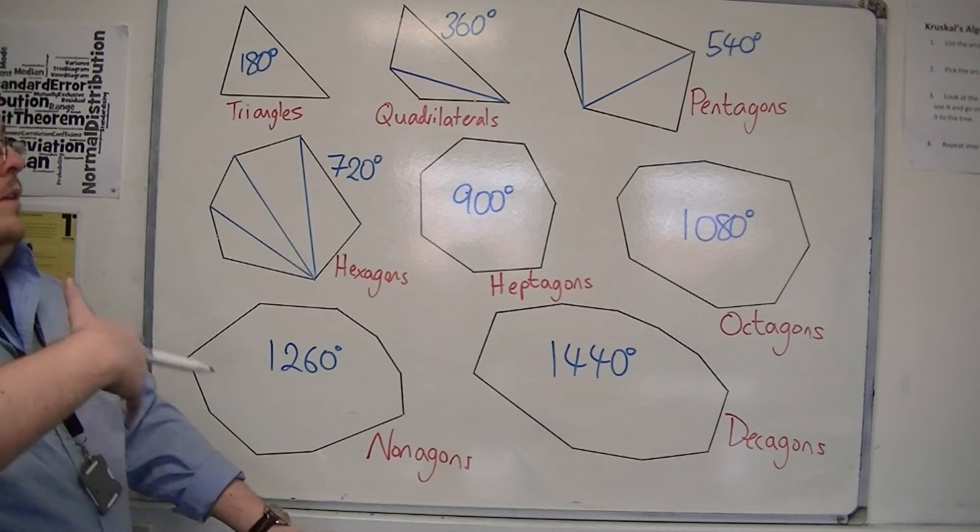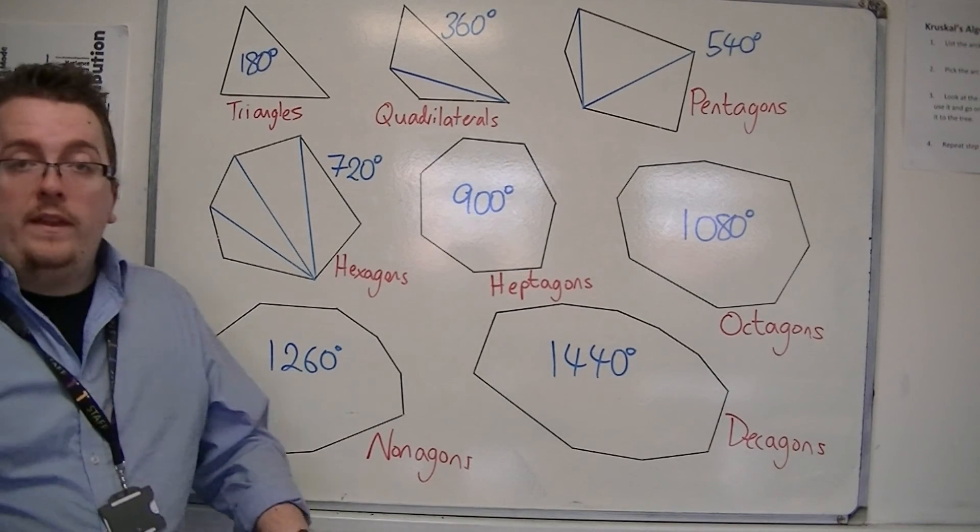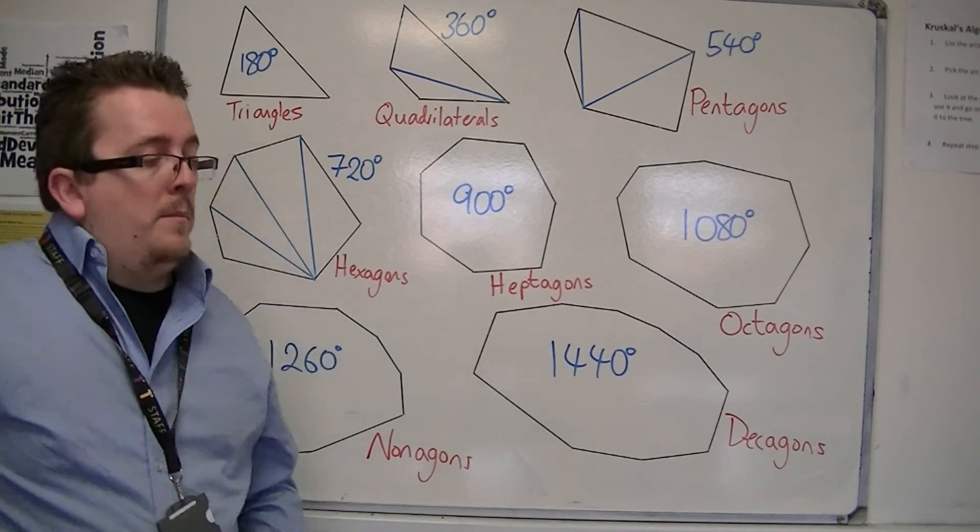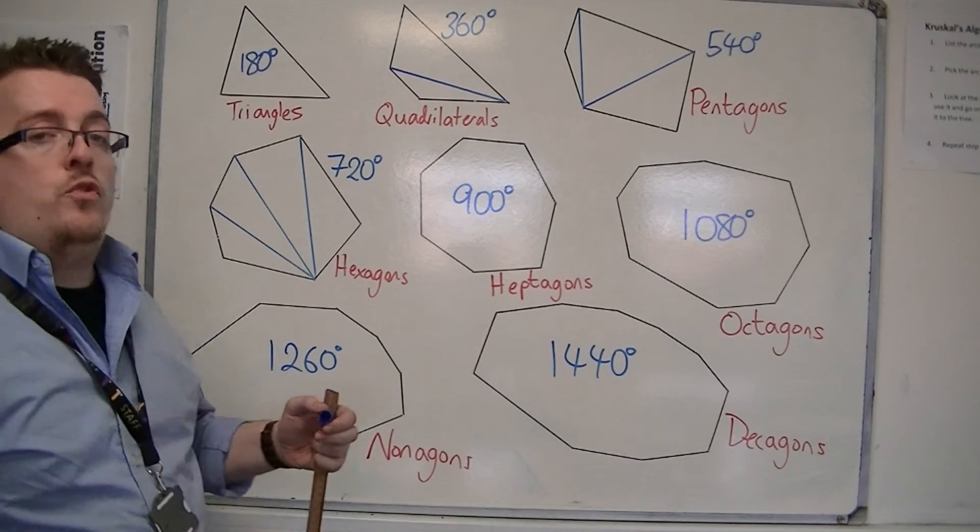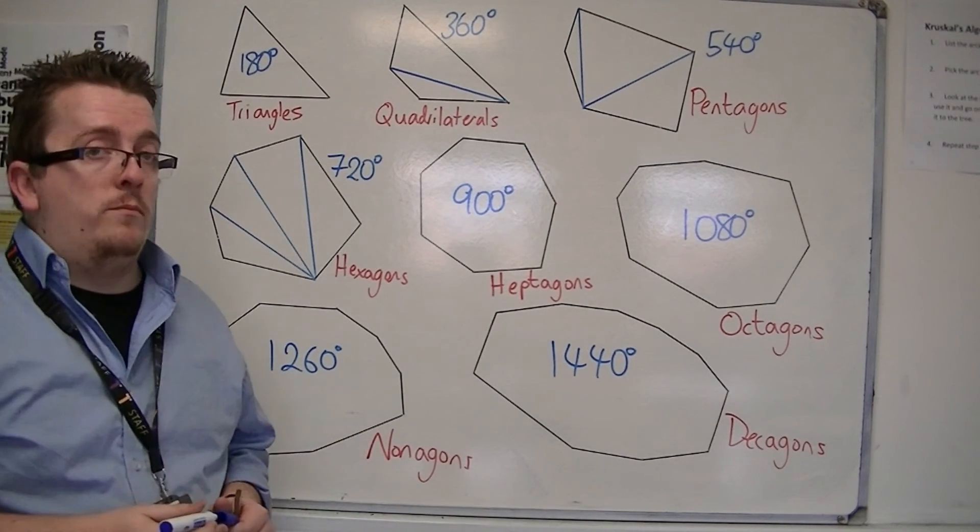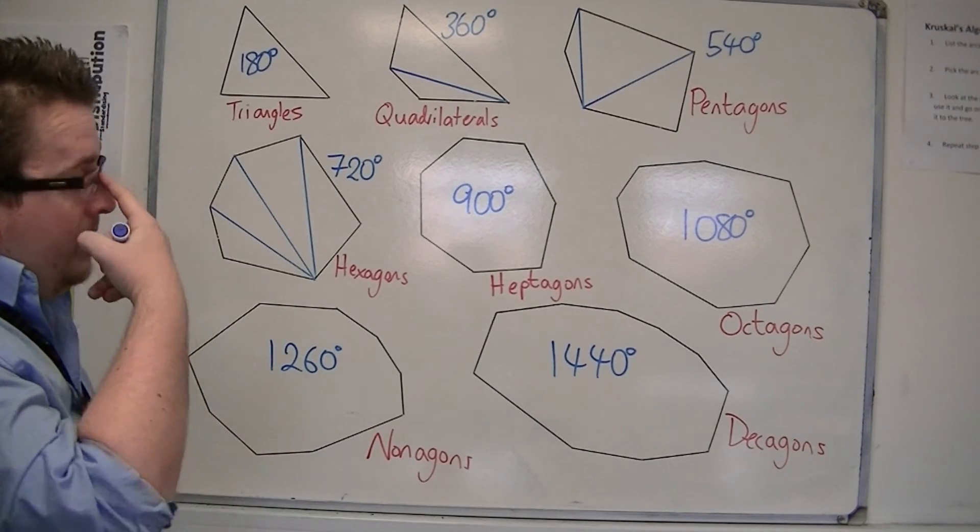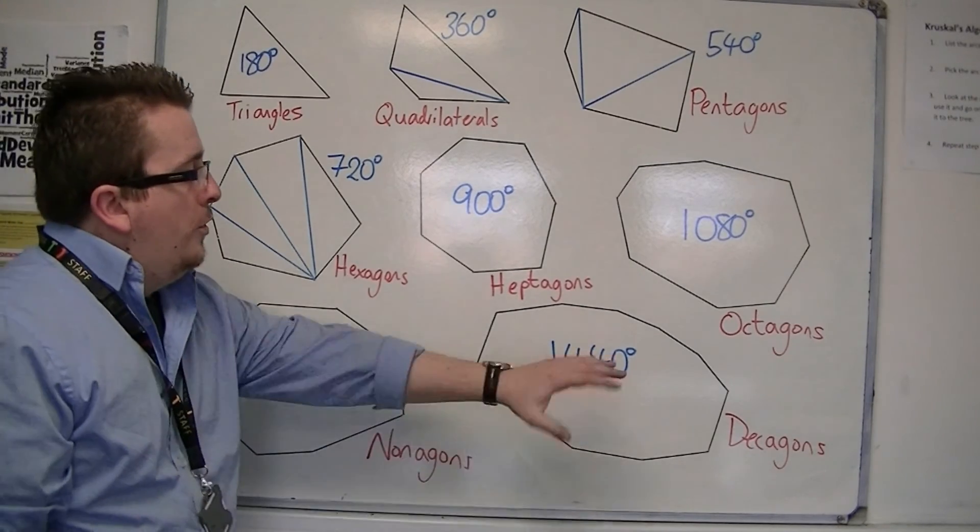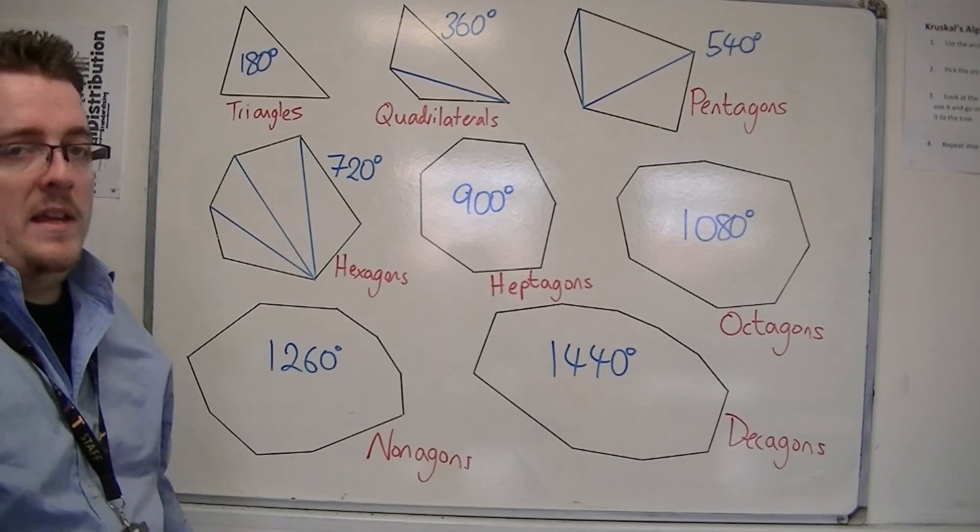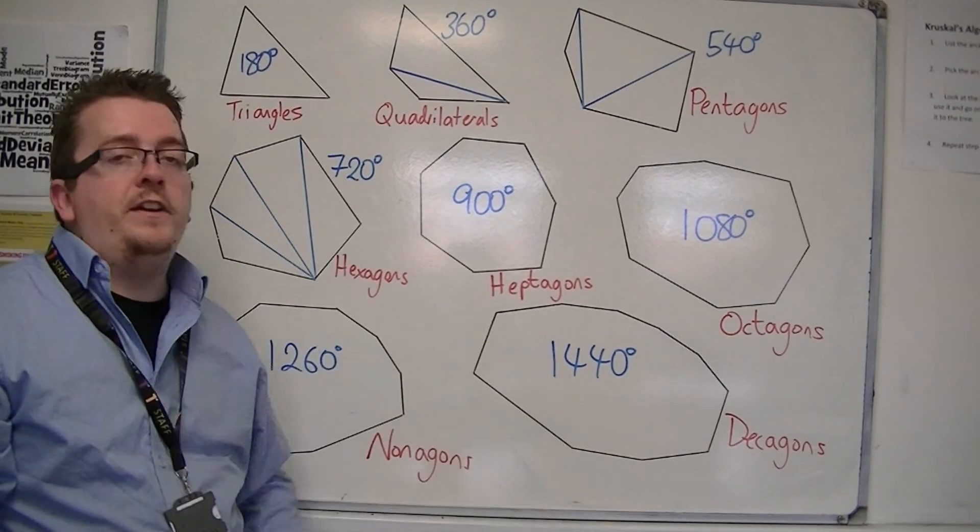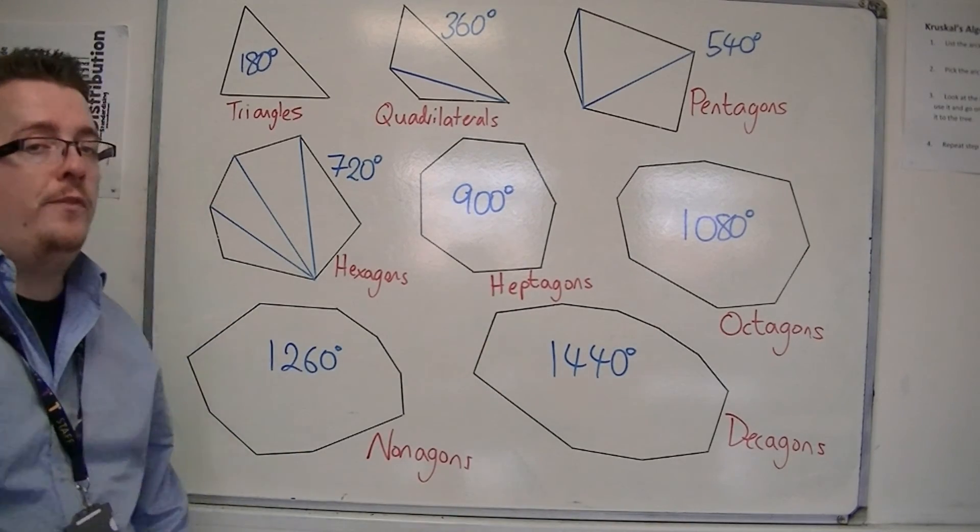So you could remember all these and memorize them, but ultimately that's going to be quite tricky to do. I certainly don't remember them all. So you could theoretically be asked about a ten-sided shape and work out the angles, but it's very unlikely.